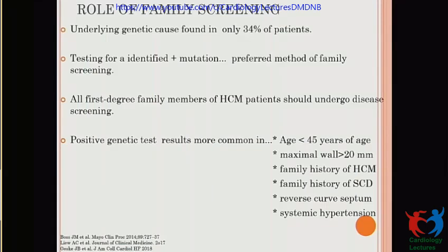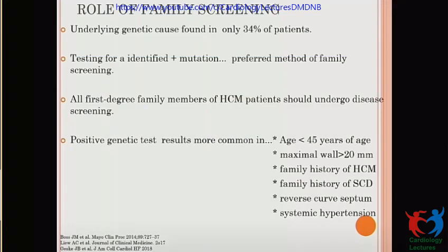Regarding genetics and family screening: the role of genetics is mainly limited to family screening. When an index patient is identified, they should undergo genetic study to detect mutations. If positive, other family members should be screened for that mutation. All first-degree family members of an HCM patient should undergo screening. Predictors of a positive result include age less than 45, maximal wall thickness more than 20 mm, family history of HCM, family history of SCD, reverse curve septum shape, and absence of systemic hypertension.